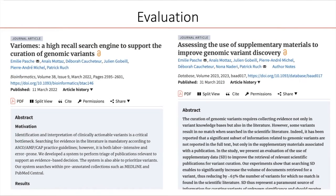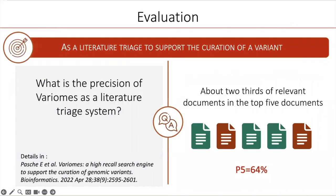The evaluation of Variome relies on several experiments, and in this video I will present the main outcomes. More details about the evaluation can be found in two articles. First, we evaluated Variome as a literature triage system to support the curation of a variant — in other words, we wanted to evaluate the precision of the top-ranked documents returned by Variome. The experiment is based on the benchmark provided by the Track Precision Medicine competition. The results show that Variome retrieved about two-thirds of relevant documents in the top five.